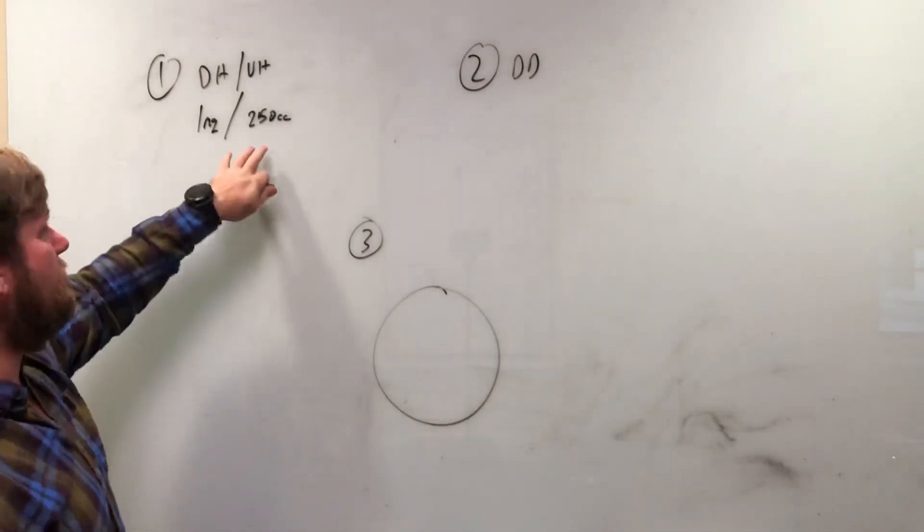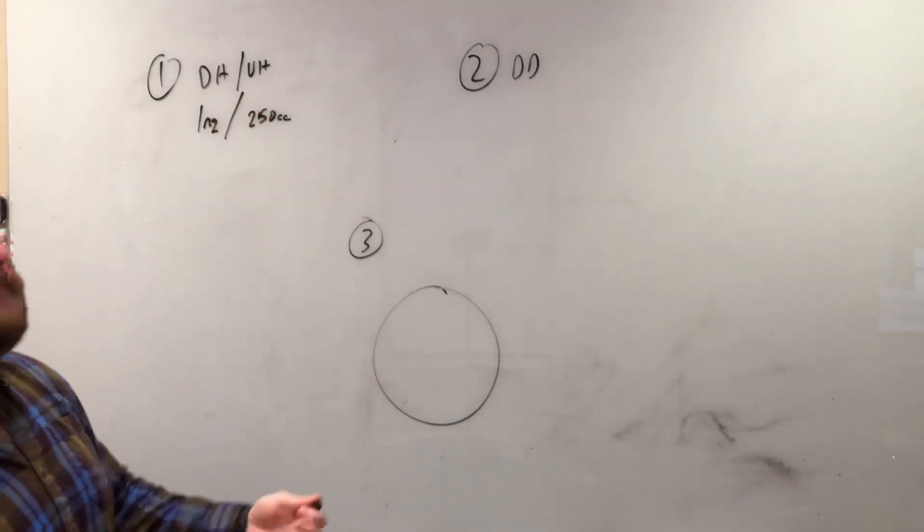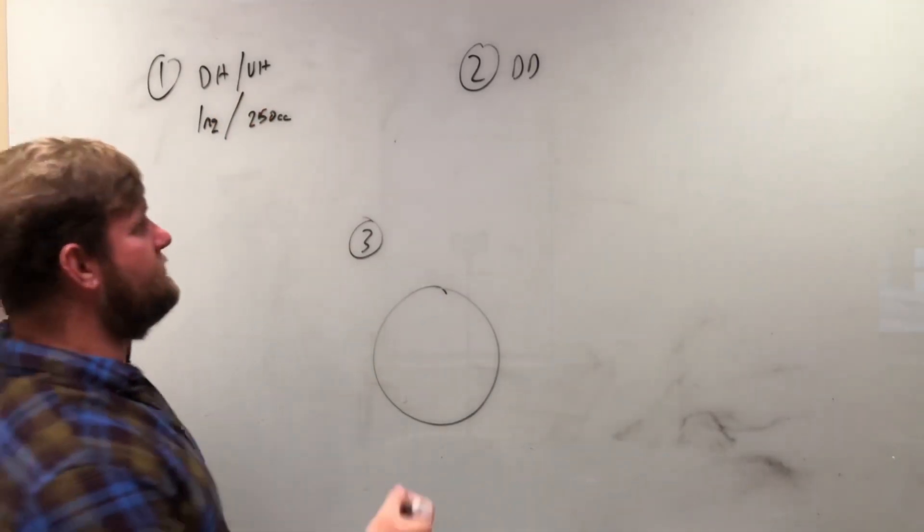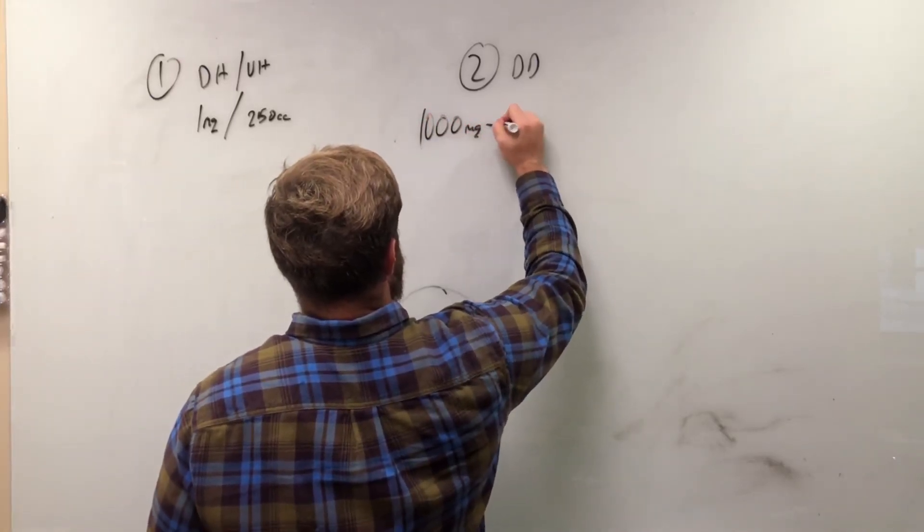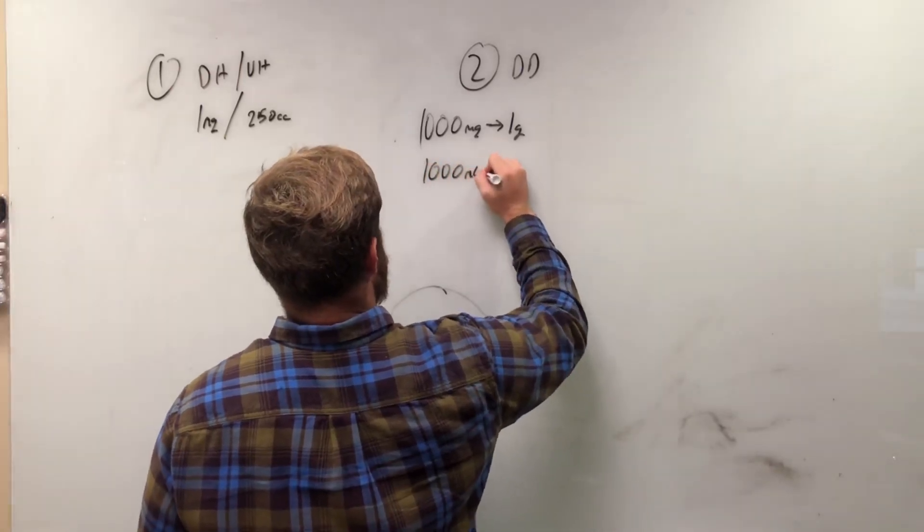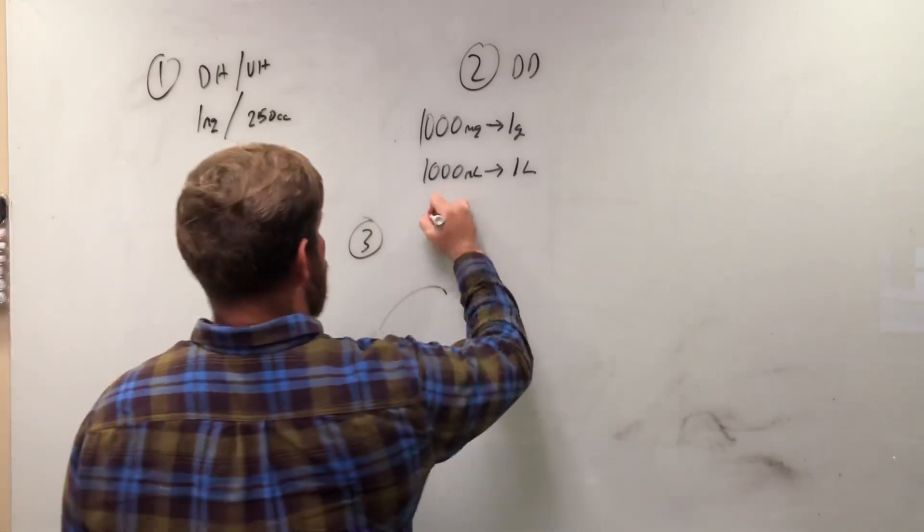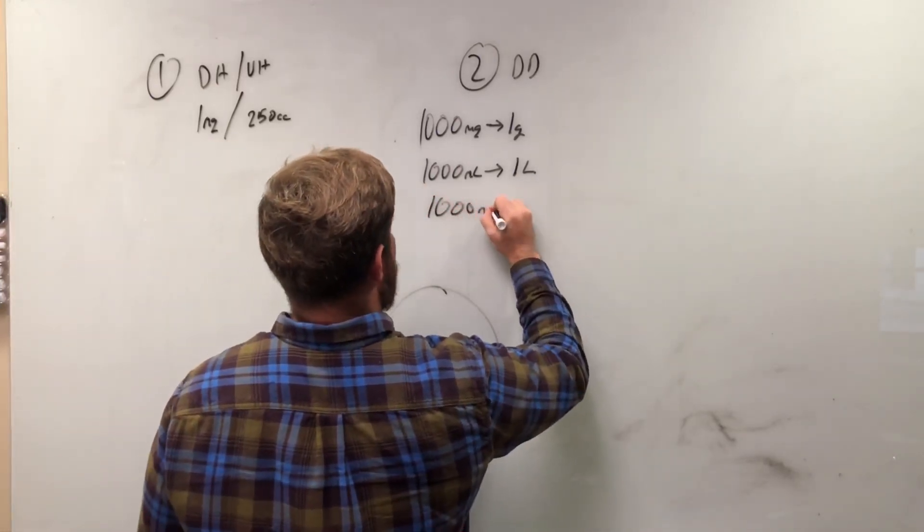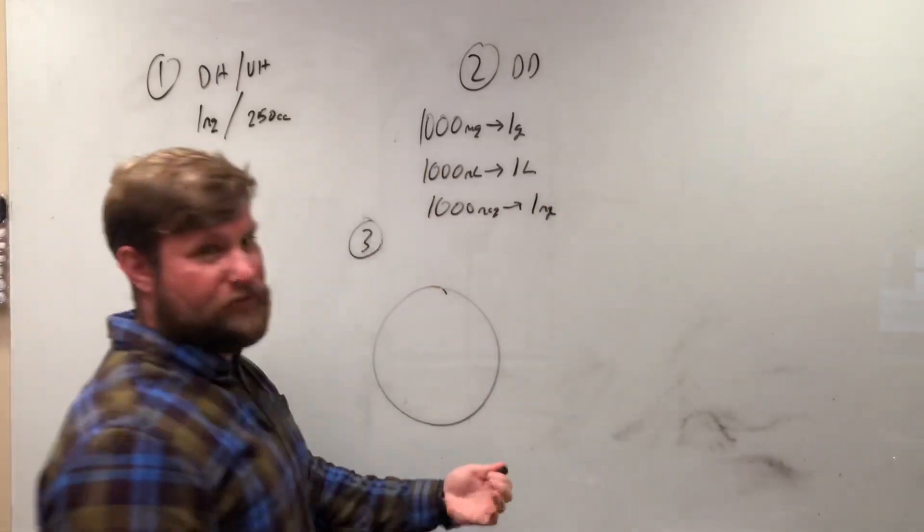Now, how we figure this out is it's a factor system here. How many times does the volume I have go into 1,000? Well, why are we picking 1,000? Well, because it's the metric system. We have 1,000 milligrams into one gram. We have 1,000 milliliters into one liter. We have 1,000 micrograms into one milligram. Kind of getting the trend here, metric system.